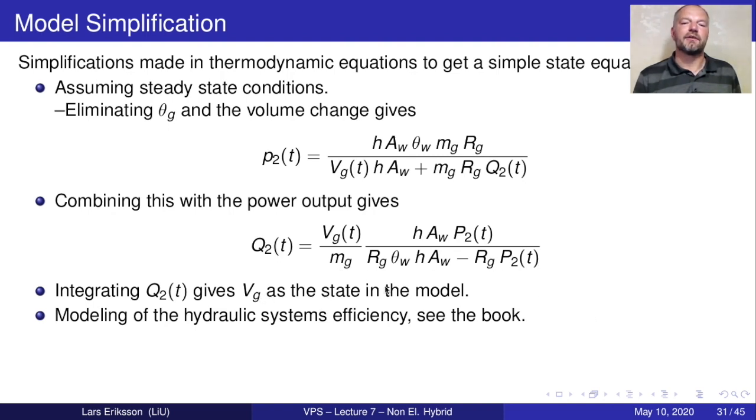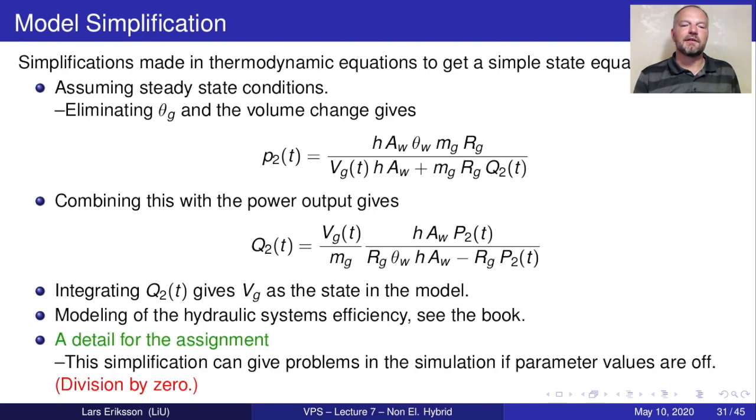By adding an integrator for the hydraulic oil flow, we get our state that is the gas volume in the hydraulic accumulator. More details about modeling the hydraulic system efficiency is given in the book. One detail if you select to do this assignment: if you look into this simplification and if you look into this denominator, you see that there's a minus sign. If you get the wrong coefficients for the different model components like the ideal gas constant, the temperature, the wall heat transfer coefficient, the wall area, then you might get division by zero and simulation might crash.